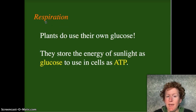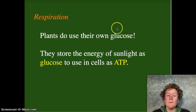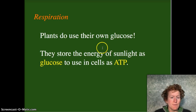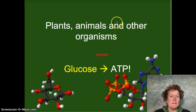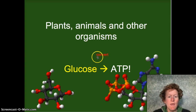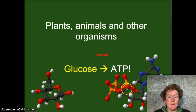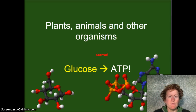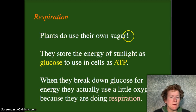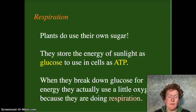Respiration happens in plants and animals. Plants break down their own glucose — they only store the energy of the sun as glucose. When they need energy, they break it down in cellular respiration just like we do. They store the energy in glucose, and when they need to use it, they make it into ATP. Plants, animals, and other organisms like bacteria and fungi convert glucose to ATP. Glucose is a monosaccharide — a sugar with one ring — and they make it into ATP, though it's a complicated process.